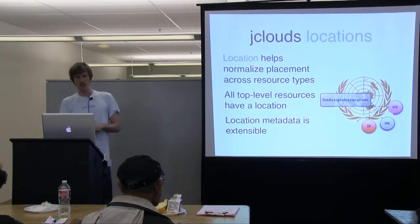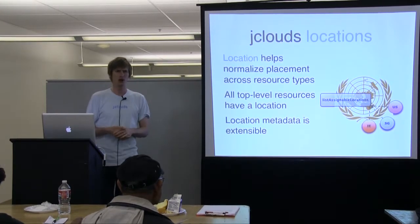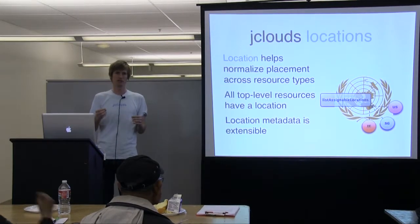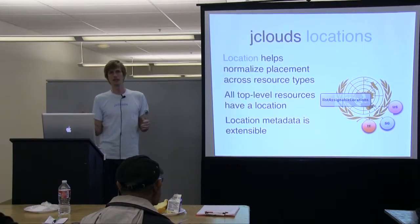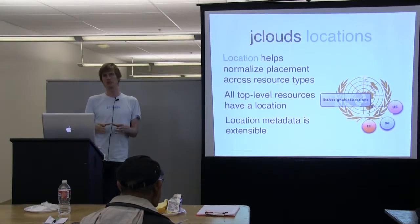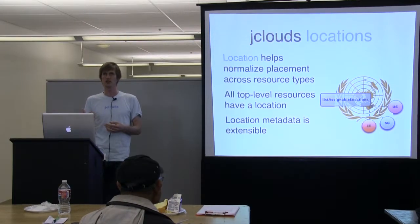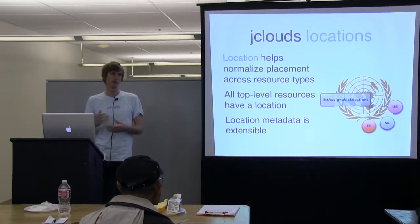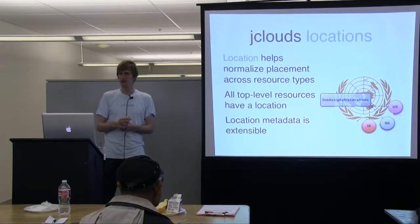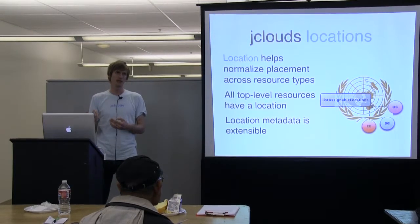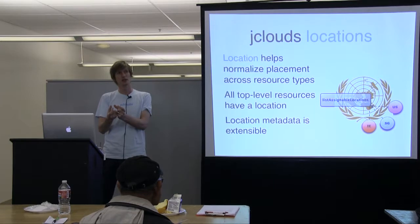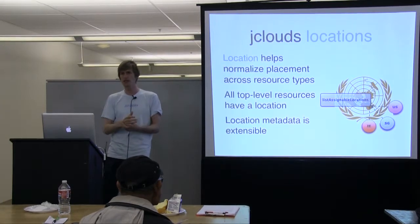A location could be within the same provider — for example, what some people call multi-cloud can mean running the same app in different Amazon regions, or using different cloud providers altogether. We use the word 'location' to describe a place or point of presence for a specific service. You could have a service working in the same city from two cloud providers — they would have the same location code but actually be different service providers. You can do a lot of interesting things with that.